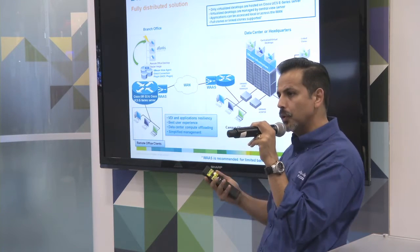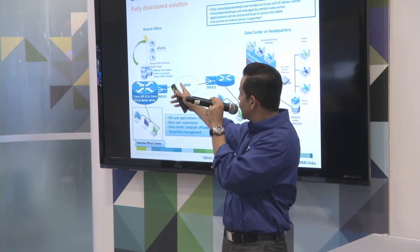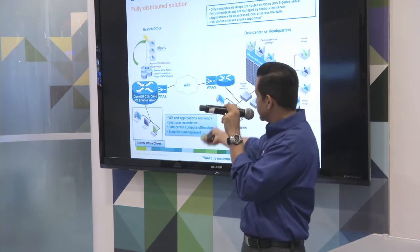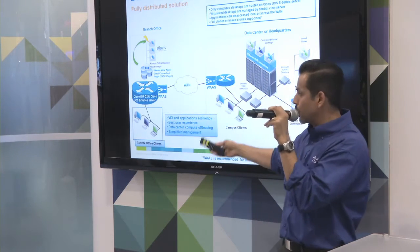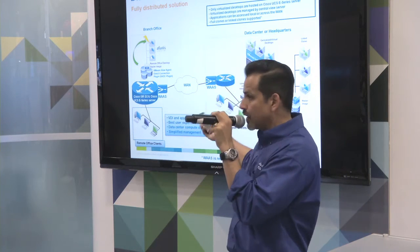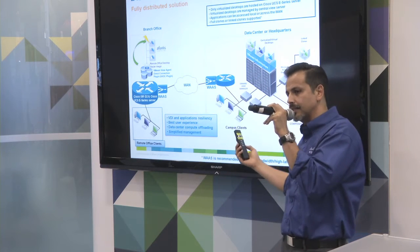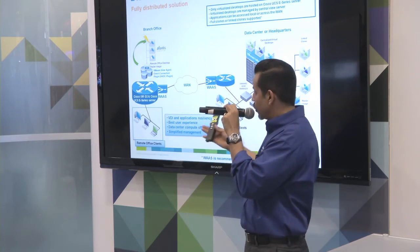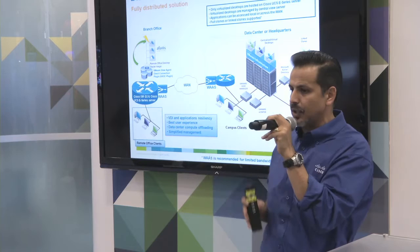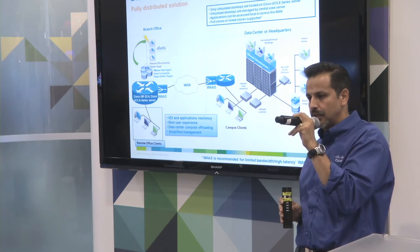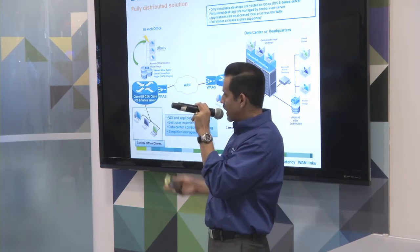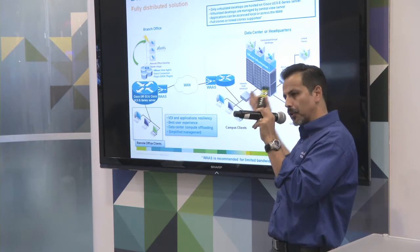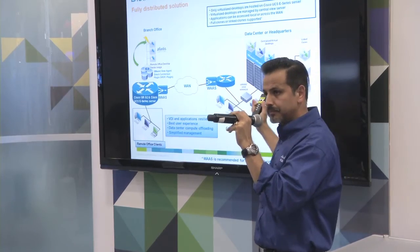There's also a plugin VMware created working with us called the VMware View Agent Direct Connection. If the WAN goes down and users are authenticating to the VMware View Connection Broker in the data center, they won't be able to authenticate. We created a plugin so that if the WAN goes down, the user can authenticate directly to the virtual machine assigned to them. There are methods of caching the applications on the server itself until the WAN comes up, and then it syncs again once the WAN is restored.